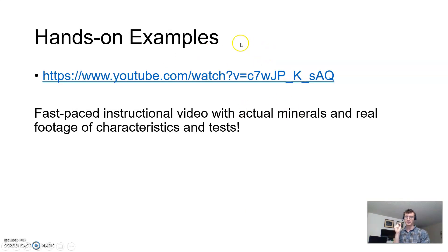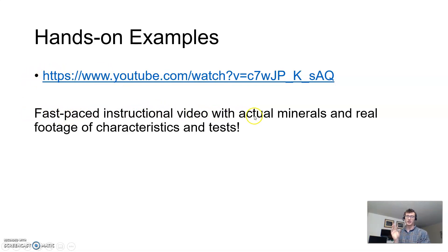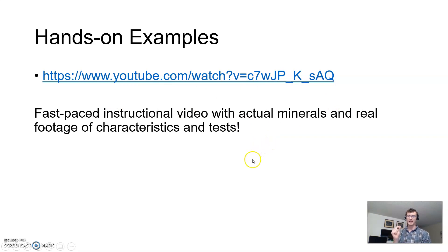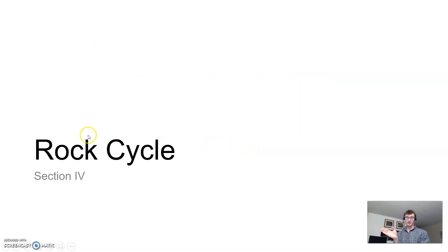Usually when I include videos at the end of a lecture, they're optional. But I would really strongly encourage you to watch this one. It's somebody giving you a review of what I just talked about, but with actual minerals. The first two numbers in the access code are seven zero. This person has actual minerals and real footage of them examining these different characteristics and performing some of these tests — it may be more valuable than just seeing the slides. Next, we're going to talk about the rock cycle.